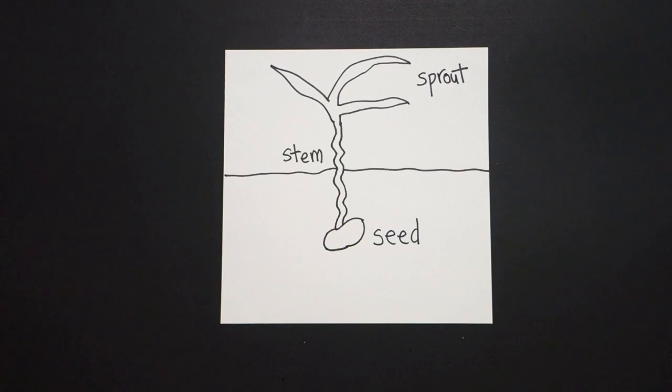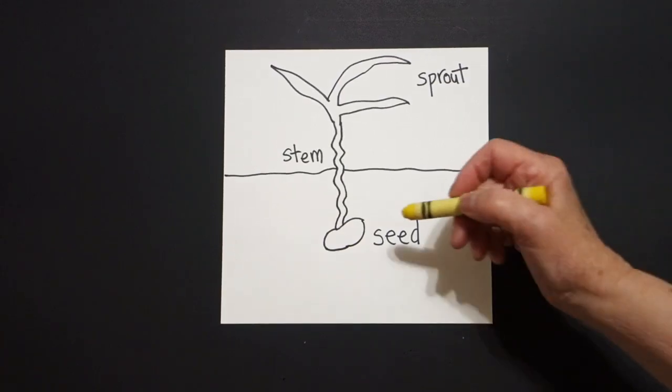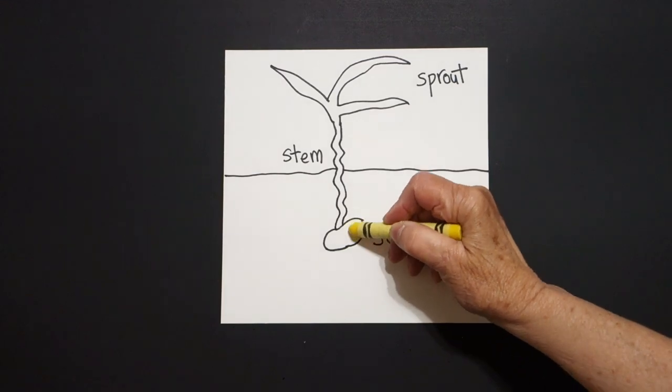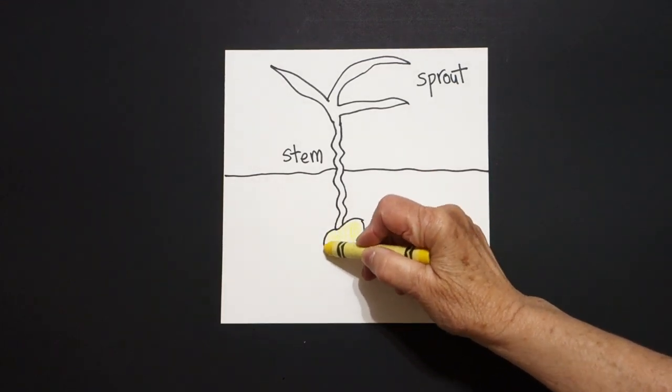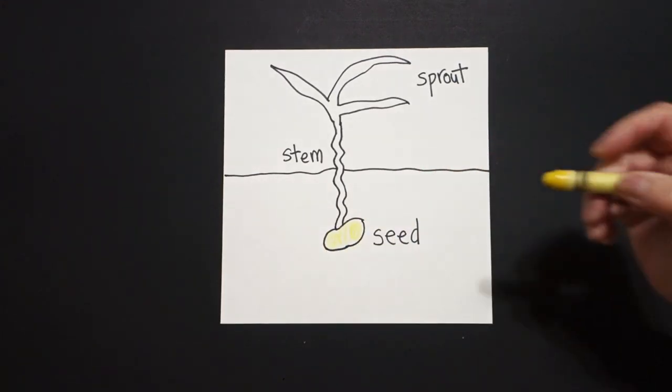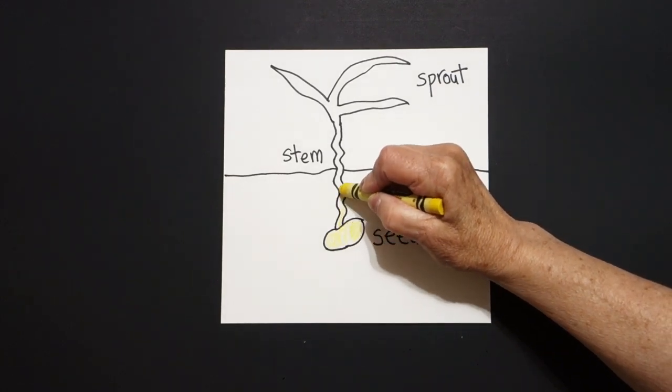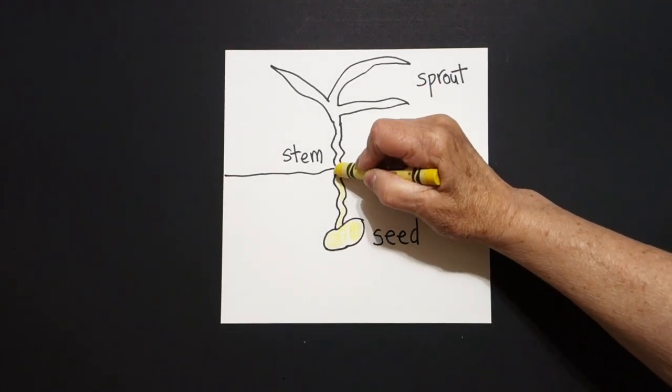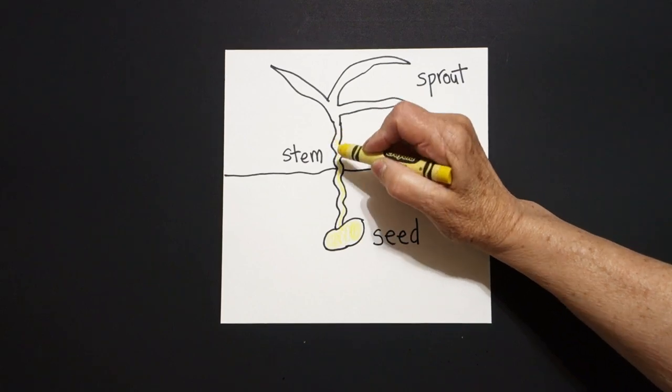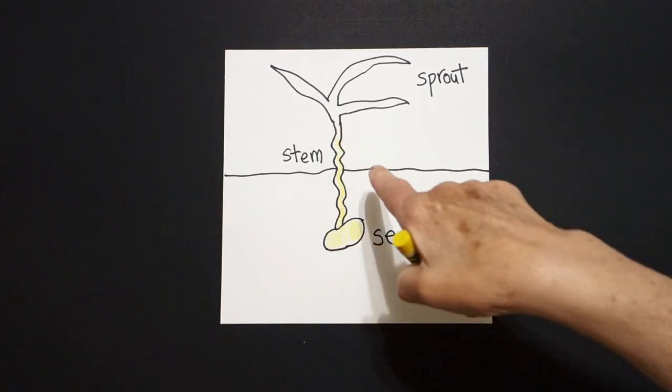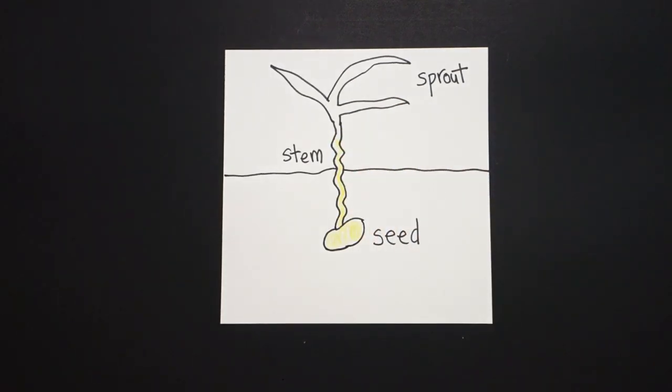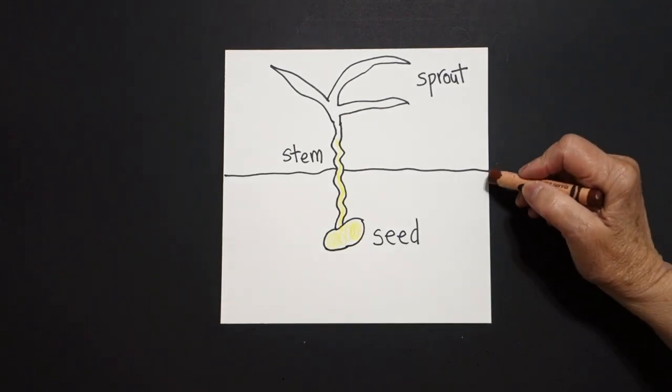All right, let's see how we're going to color this in. Okay, I'm going to start off with yellow and I'm going to color in my seed yellow. But part of the seed, which becomes the stem, keep going with some yellow all the way up to this middle line. Because the middle line is very important.